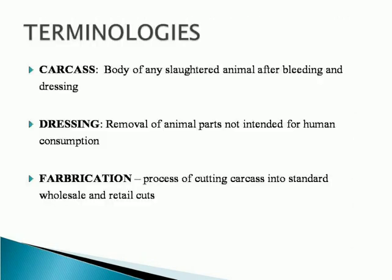We are going to learn about veterinary science and terminology. Carcass: the body of any slaughtered animal after bleeding and dressing. Dressing refers to the removal of animal parts not intended for human consumption.